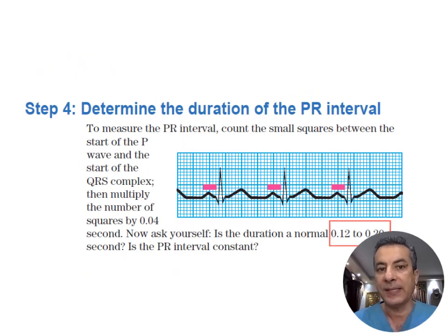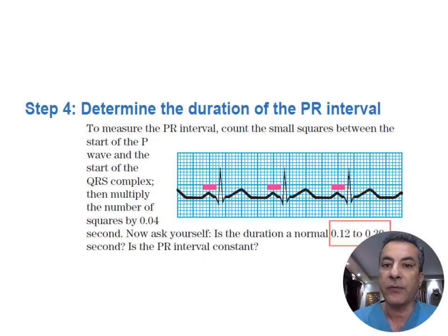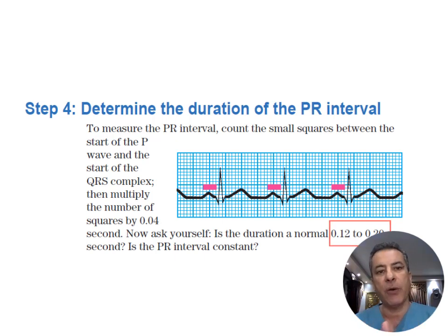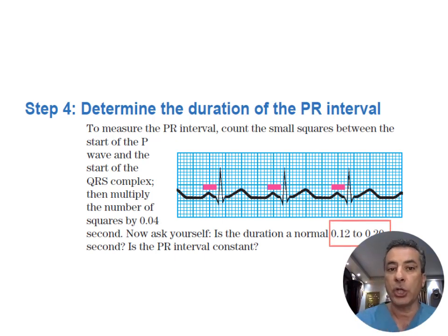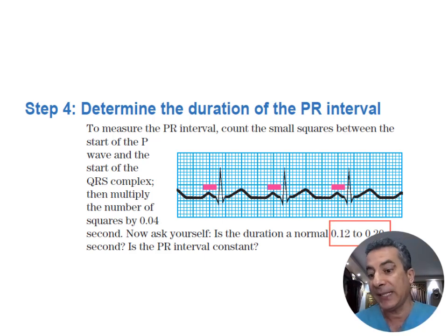The fourth step is to determine the duration of the PR interval by counting the number of small squares from the onset of the P wave to the initiation of the QRS complex. This duration should not exceed 200 milliseconds and should not be less than 120 milliseconds.